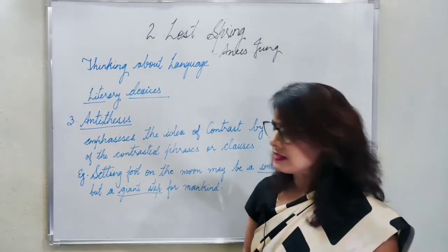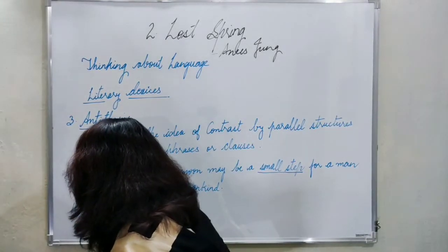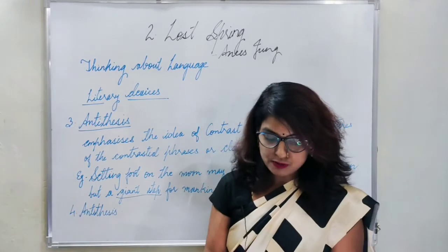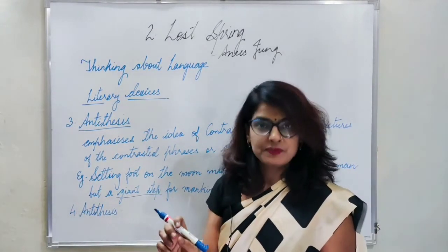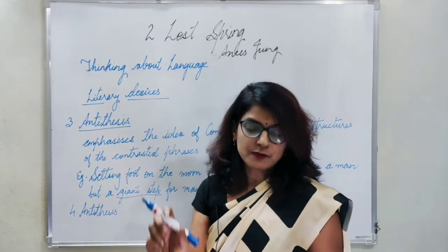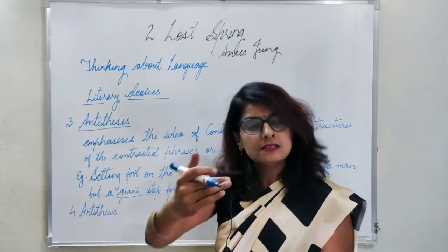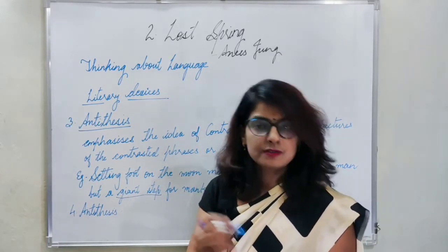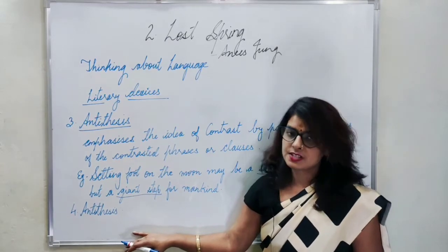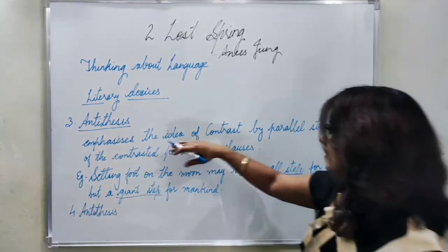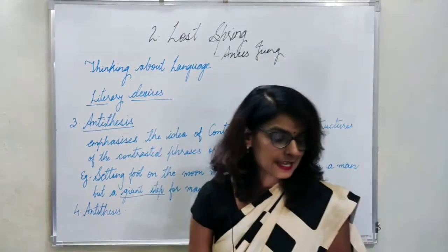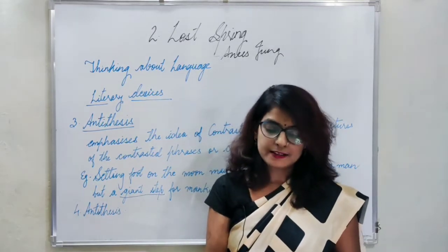The fourth sentence is also antithesis because 'wrapped in wonder' and 'means of survival' are opposite ideas, and 'for the children' and 'for the elders' are also opposite. So antithesis is used here to emphasize the contrast through opposite phrases in a parallel structure. The fifth sentence is 'as her hands move mechanically like the tongs of a machine.' The answer is simile because two things are compared using the word 'like.'